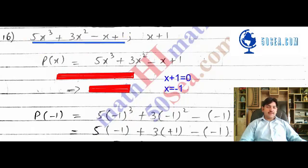This is P of x equals. So here we have P of x equals 5x cubed plus 3x squared minus x plus 1.